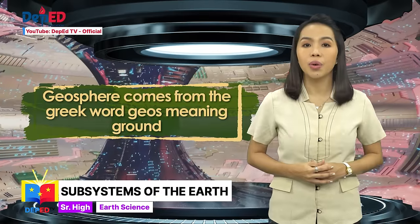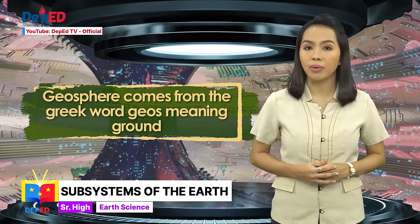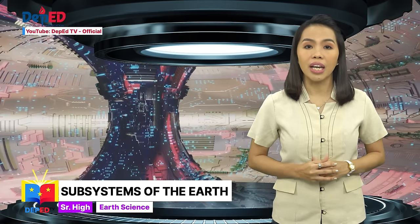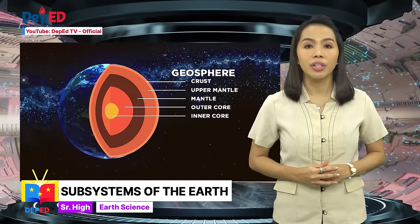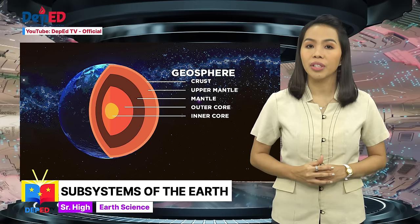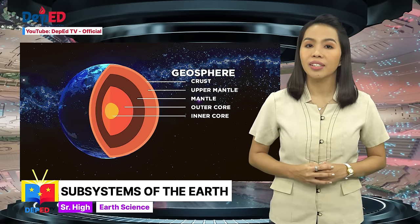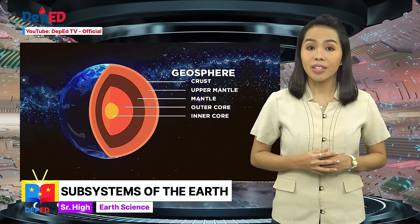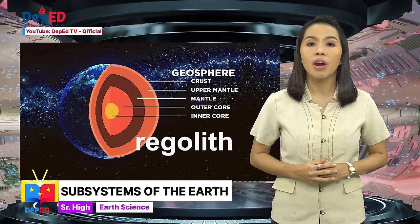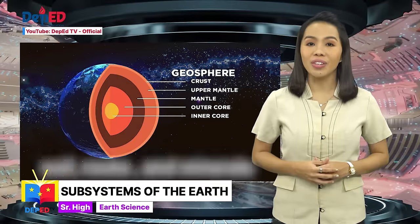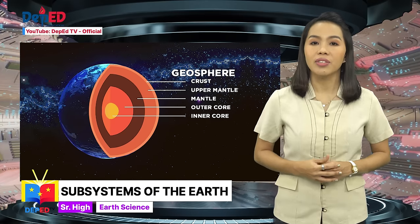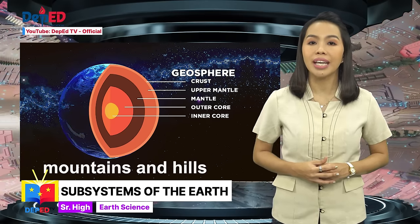The geosphere comes from the Greek word geos, meaning ground. It refers to the solid part of the earth, divided into three layers: the crust, mantle, and core. It is composed of naturally occurring solid aggregates of minerals, organic material, or natural glass called rocks, and also loose particles called regolith. It contains all the soil, rocks, and minerals from the crust to the core, and comprises geologic landforms such as mountains and hills.